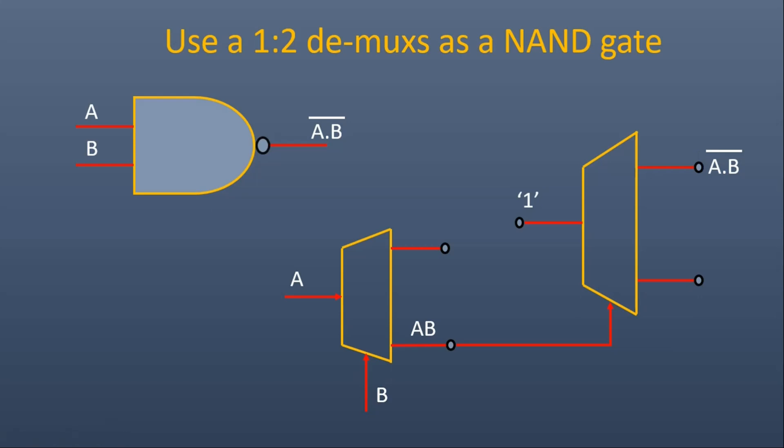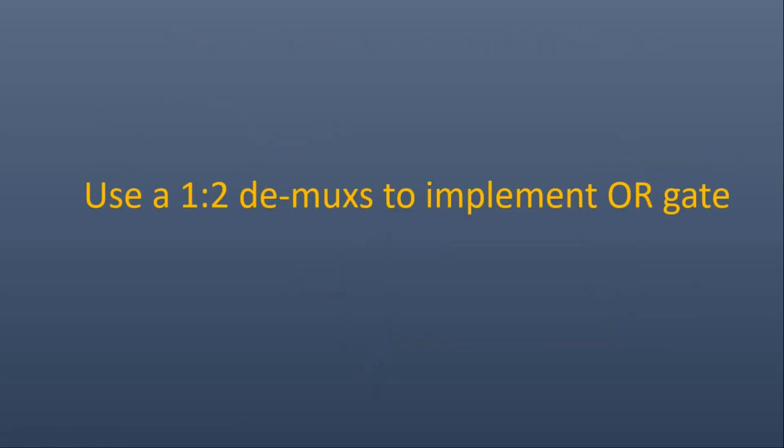Now I have a question for you — the question of the day is: use 1×2 demultiplexers to implement an OR gate. I will give its answer in the next video, but those who know the answer please write it down in the comment section. With this I am going to end this episode. I hope it was quite informative for all of you. Those who have not subscribed to my channel yet, please subscribe so you stay aligned with future videos. Thank you so much for watching.